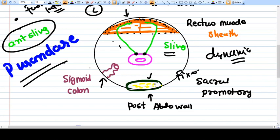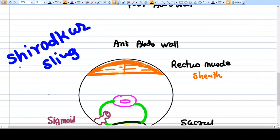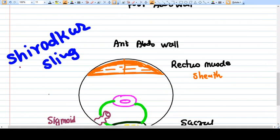This is also a very important structure and has good results. Then we will go with Shirodkar sling. What we do in Shirodkar sling? It is a posterior sling.